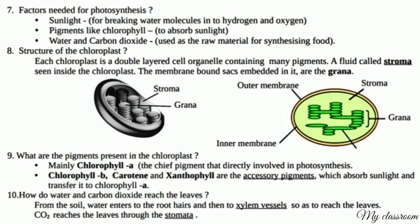What are the pigments present in the chloroplast? Mainly chlorophyll A, the chief pigment directly involved in photosynthesis. Chlorophyll B, carotene, and xanthophyll are the accessory pigments which absorb sunlight and transfer it to chlorophyll A.